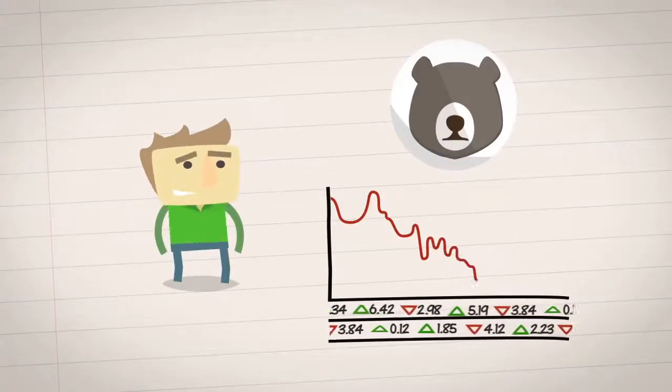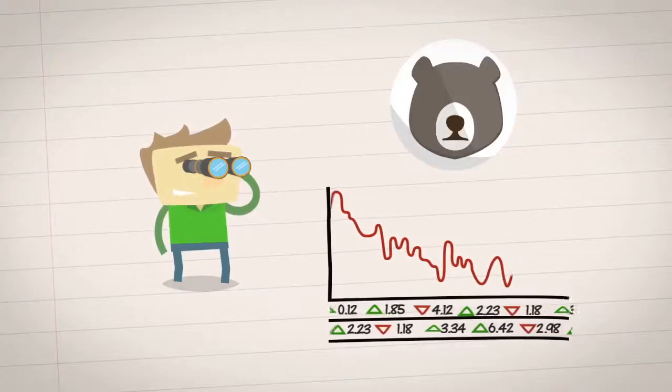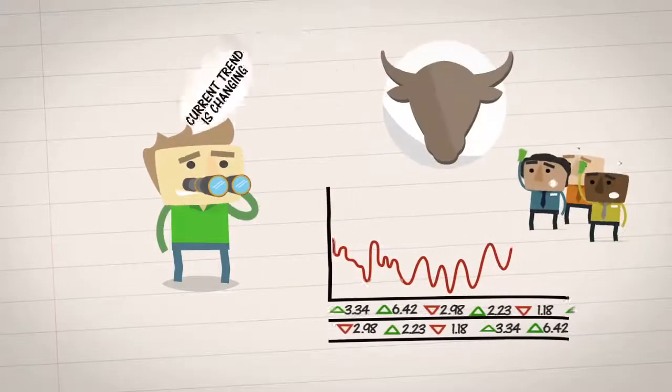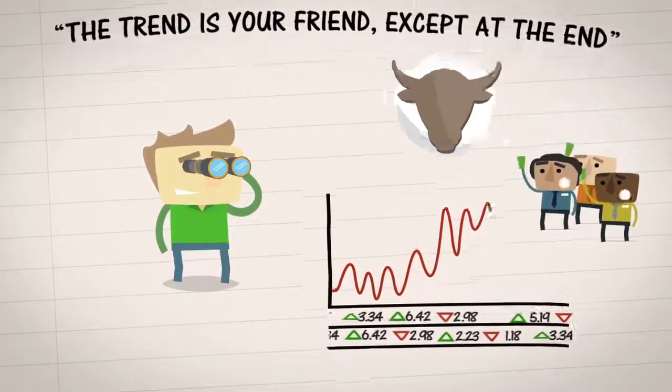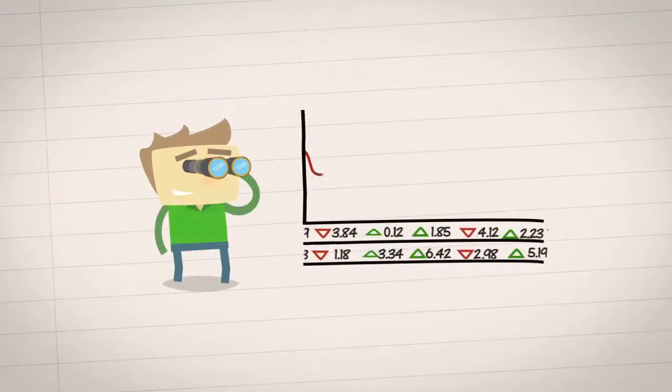Instead, find an objective way to both identify the current trend and decipher when that trend has changed. Because just like the saying goes, the trend is your friend except at the end. So let's explore two simple techniques for identifying market trends.